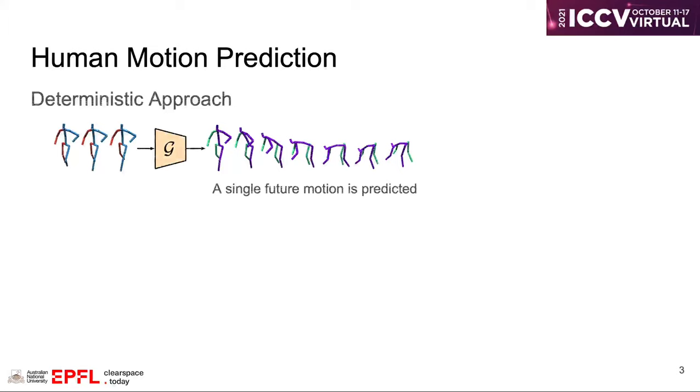There are two types of approaches for human motion prediction. The first one is a deterministic approach, where we learn a deterministic mapping from the history to the future.